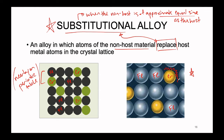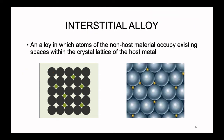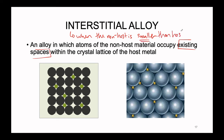Take this in contrast to the other form that an alloy can take, which is known as an interstitial alloy. This is an alloy in which atoms of the non-host material occupy existing spaces within the crystal of the host metal. The interstitial alloys, which we can see in the illustration down below, are formed when the non-host is smaller — pretty significantly smaller — than the host. So these non-host atoms are small enough to fit in the gaps between the host without having to completely swap places with it.